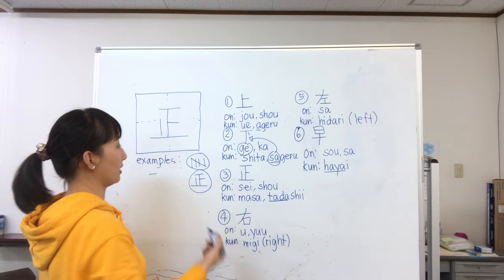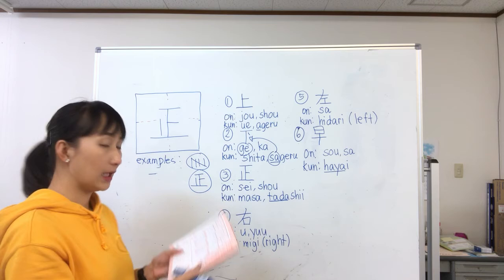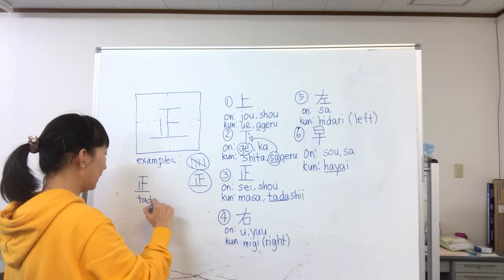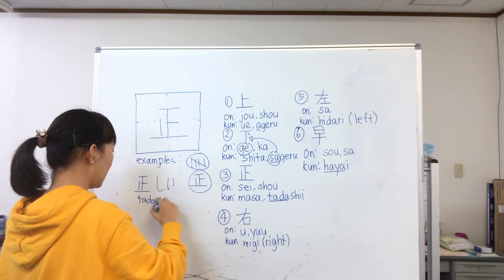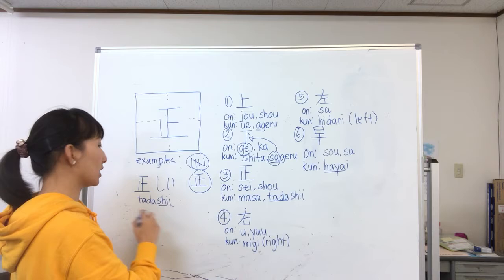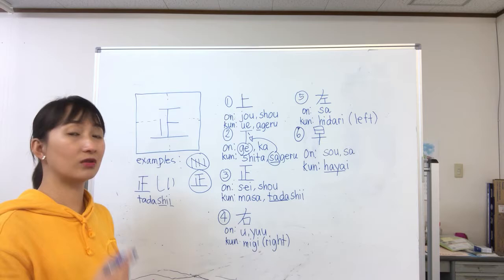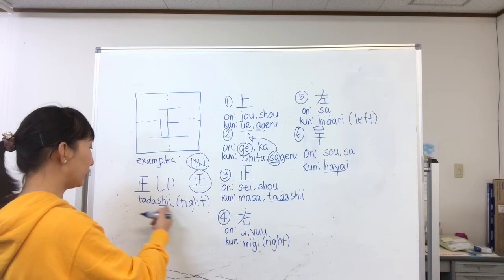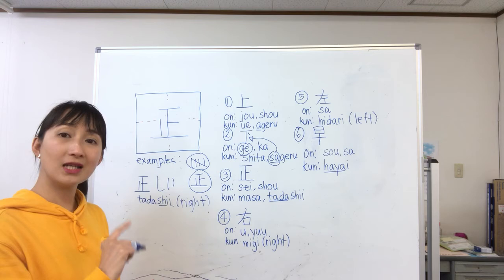Going back to our example: tadashii — this kanji is written for tada, and then shii is in hiragana. You have to elongate the 'shi' sound because there is a double i. So it's tadashii, not tadashi. Tadashii means right or correct.